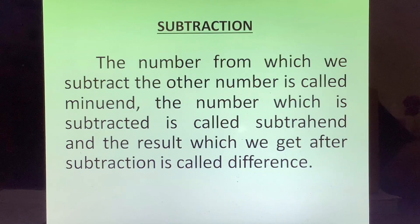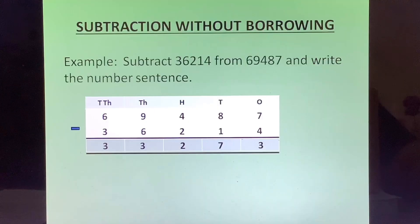The number from which we subtract the other number is called minuend. The number which is subtracted is called subtrahend, and the result which we get after subtraction is called difference. Now let us look at the previous example. Here 69487 is the minuend, 36214 is the subtrahend, and 33273 is the difference.